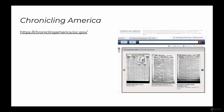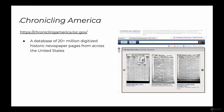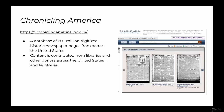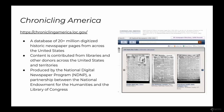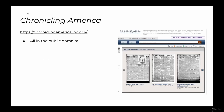Let me give some context for the collection that Newspaper Navigator is built on — Chronicling America. Chronicling America is a database of now over 20 million pages of digitized historic newspaper pages from across the United States. Content is contributed from libraries and other donors across the United States and territories. It's produced by the National Digital Newspaper Program, a partnership between the National Endowment for the Humanities and the Library of Congress. All of these pages are in the public domain, making it a vast resource for use and reuse.